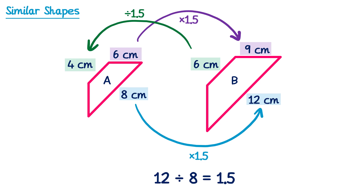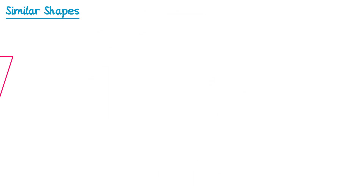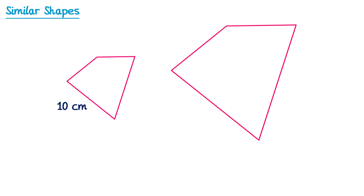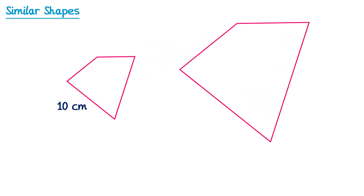So far when looking at similar shapes we've only looked at what happens to the sides, but we also need to look at what happens with the angles. If we take a shape with a length of 10cm and draw one that's twice as big, this length will be 20cm. We know the sides all double, but what happens to the angles?